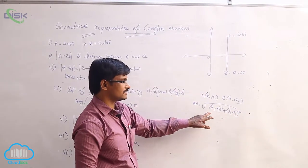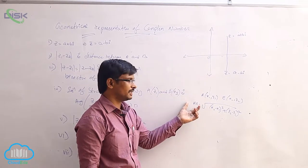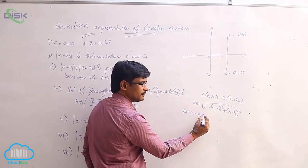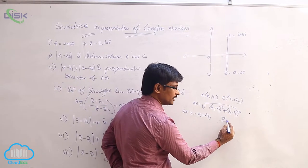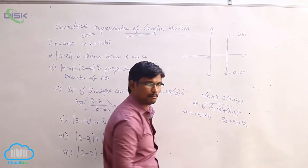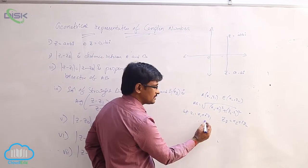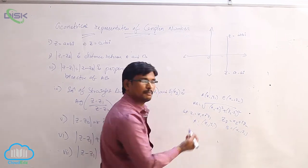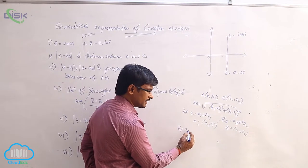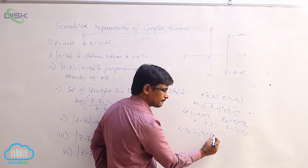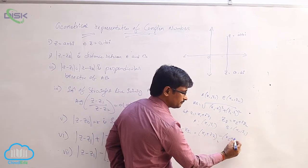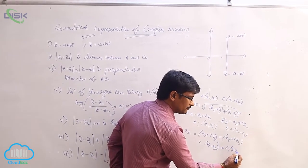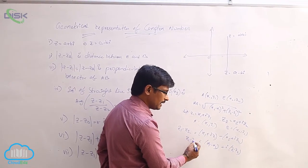Similarly, in the complex number system, the distance between two points is denoted by mod(z1 minus z2). Let z1 equal to x1 plus i·y1 and z2 equal to x2 plus i·y2. These are two complex numbers represented as ordered pairs (x1, y1) and (x2, y2), treated as points A and B. Then z1 minus z2 equals (x1 minus x2) plus i(y1 minus y2).